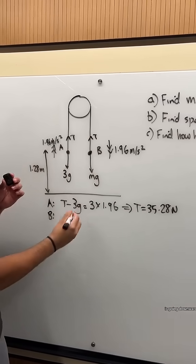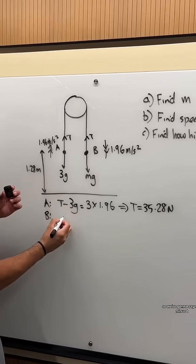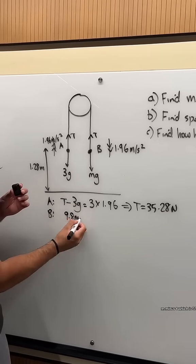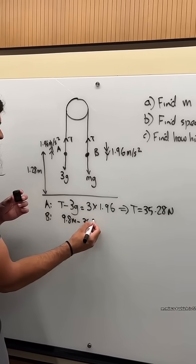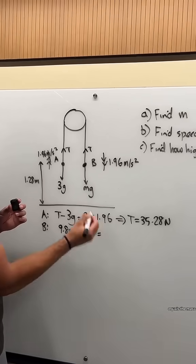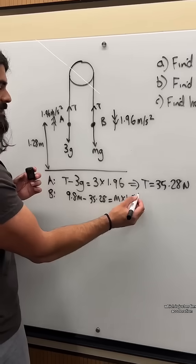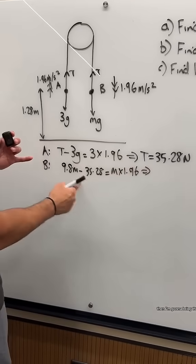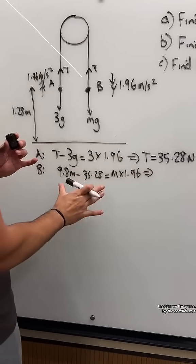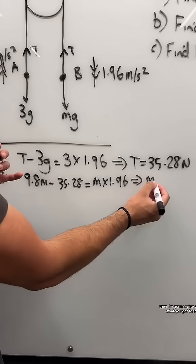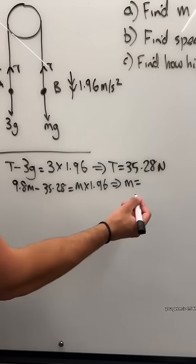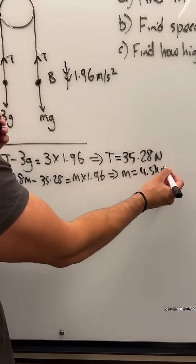Now we need to do the same for part B. It's going downwards. So we're going to say MG minus T, which is 9.8M minus T, which is 35.28, equals the mass, which is just M, times acceleration. I'm going to bring this here, the 35 here. I'm going to divide by the coefficient of M, and I'm going to write down what you get for M. You get M is 4.5 kg.